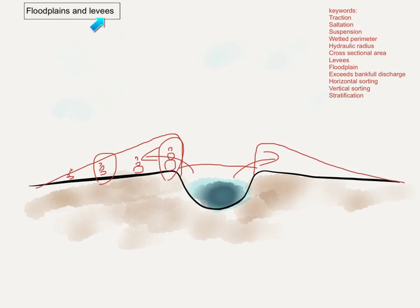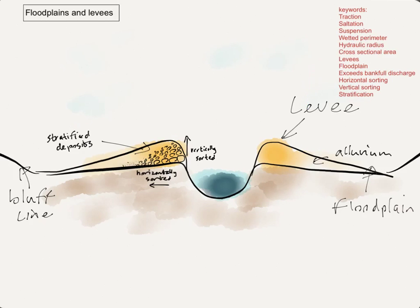If you want to get full marks in the exam, you need to use all of the keywords shown. Here is the finished diagram that shows the main points again with the keywords. You can see the horizontal and vertical stratification. At A-level these are called stratified deposits — you can get away with saying 'sorted' at GCSE. The deposits are all made of alluvium, and the whole thing sits on the floodplain.